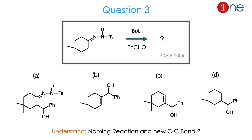Question 3. The starting material contains cyclohexane attached with a hydrogen bearing a tosylate, and there is a dimethyl group at the 4th position. You are using butyl lithium and benzaldehyde. They ask you to find the product. The products differ in the alkene position — where the alkene bond is, whether nitrogen is retained, and the position of the benzaldehyde-derived carbon. The answer is B.